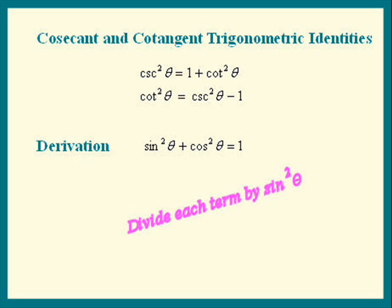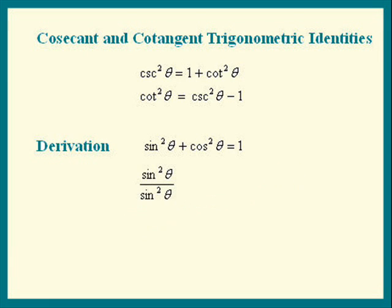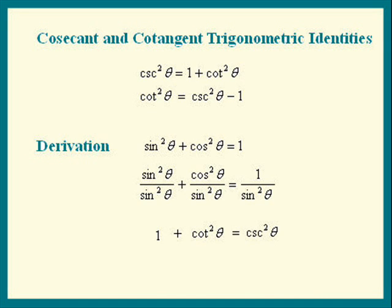We get sine squared over sine squared plus cosine squared over sine squared equals 1 over sine squared. The first term is 1. The second term is cotangent squared. And on the right side, we have cosecant squared. Rearranging the terms give us the identities on top. All done.